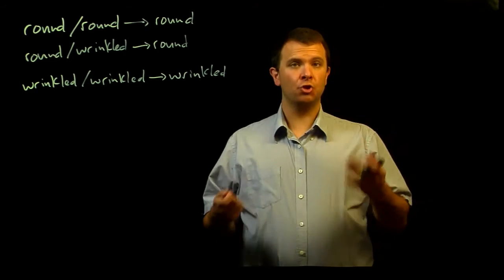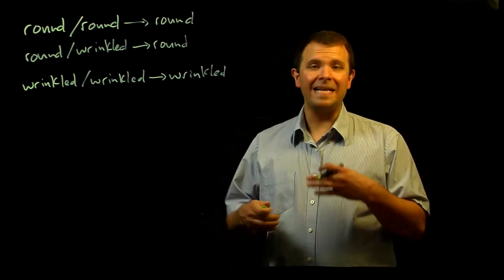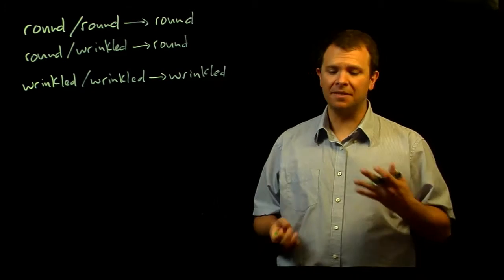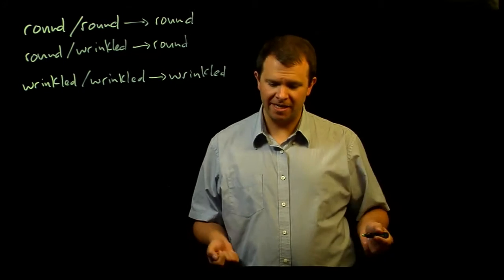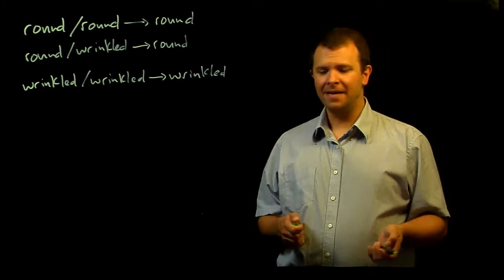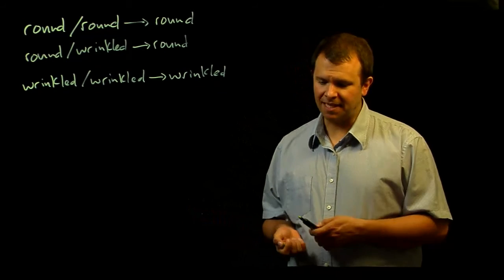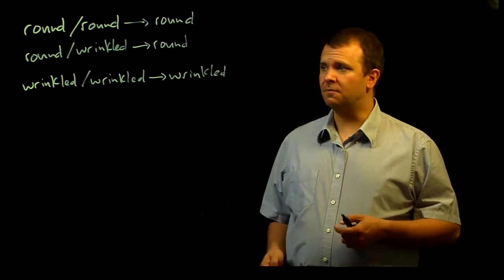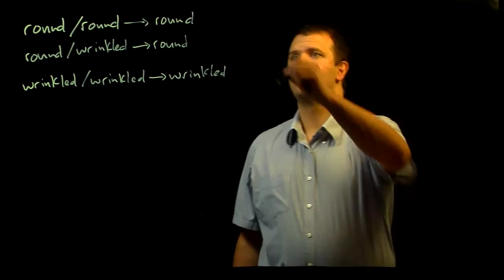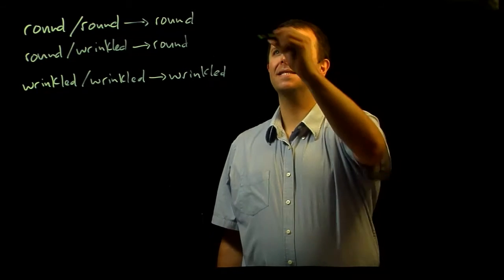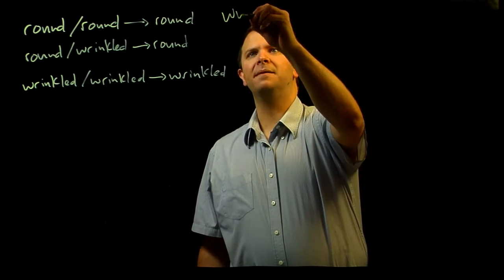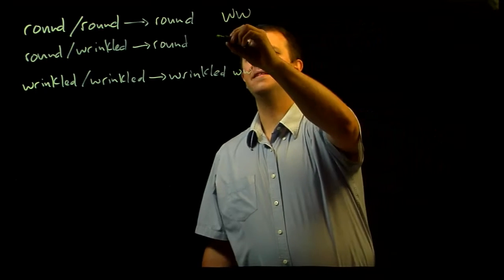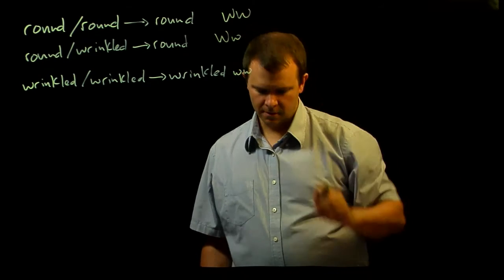Geneticists usually use a shorthand when they're writing this kind of genotype analysis. They choose a single letter to represent the gene, and the uppercase letter is the dominant allele while the lowercase letter is recessive. So let's go ahead and choose W to represent this wrinkled gene. These plants will be big W, big W. These plants will be little w, little w. And these plants will be big W, little w.